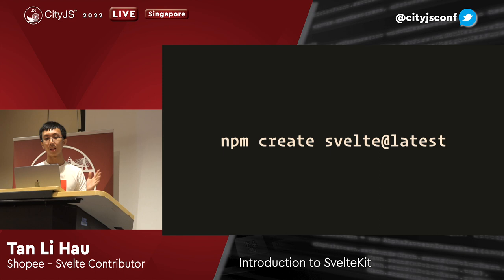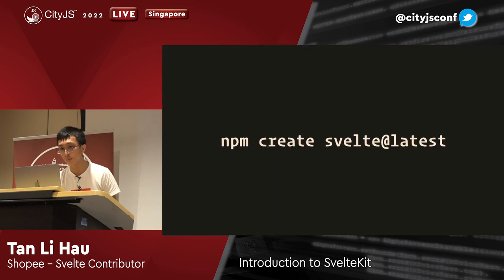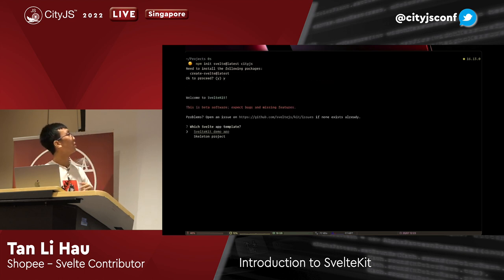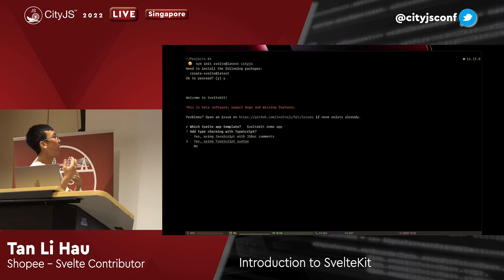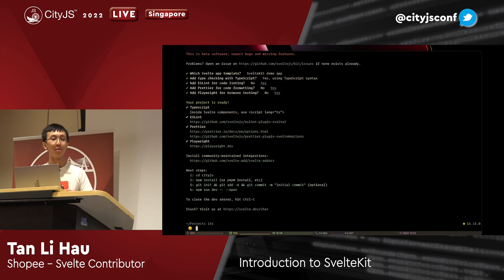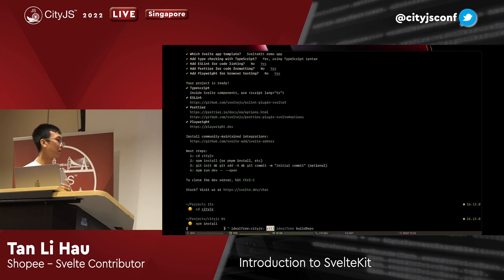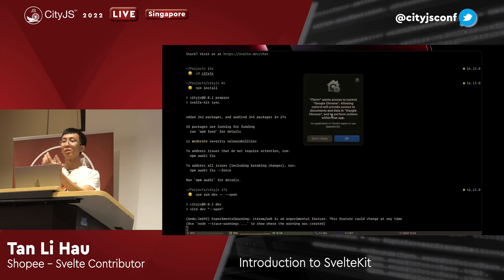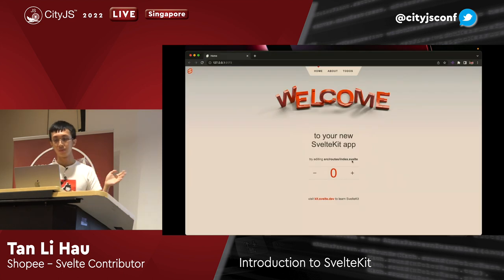To create a SvelteKit app, you run npm create svelte. It will use the Svelte template generator to generate a SvelteKit template. It goes through prompts asking whether you want a demo app, TypeScript, linting, Prettier, or Playwright for testing. You answer all the questions and it's generated. You go into that folder, npm install, then run npm run dev to start the dev server. It starts quite fast and you have a working application.